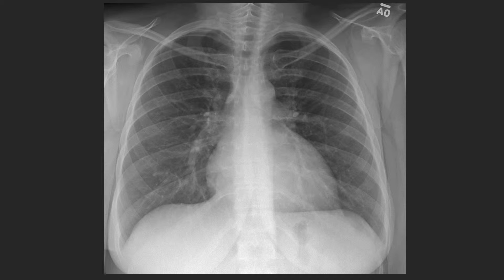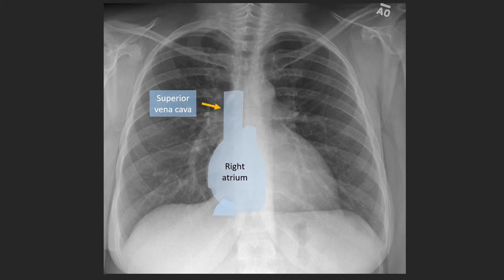To highlight the cardiovascular structures, we're going to follow blood through the heart. The first chamber where blood enters is the right atrium. Blood enters the right atrium via the SVC as well as the IVC, which is seen more inferiorly. Notice how the right atrium forms the right cardiac contour. The SVC is often vaguely seen on the frontal view whereas the IVC is typically not identified. The tricuspid valve, seen here in purple, has a midline location largely overlying the spine and is typically not visible unless surgically repaired.